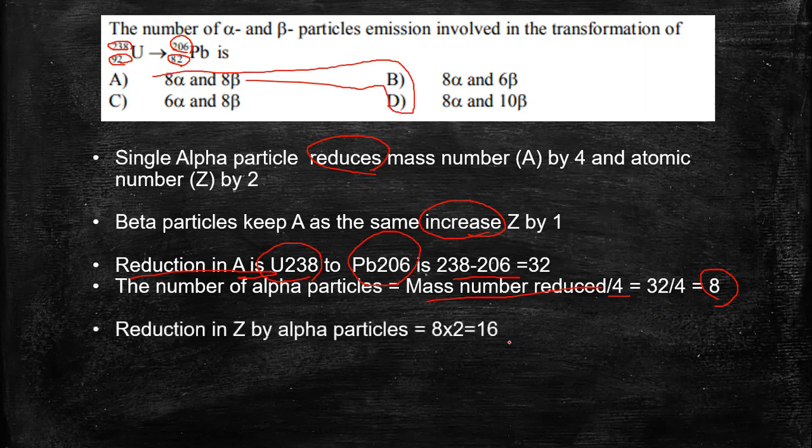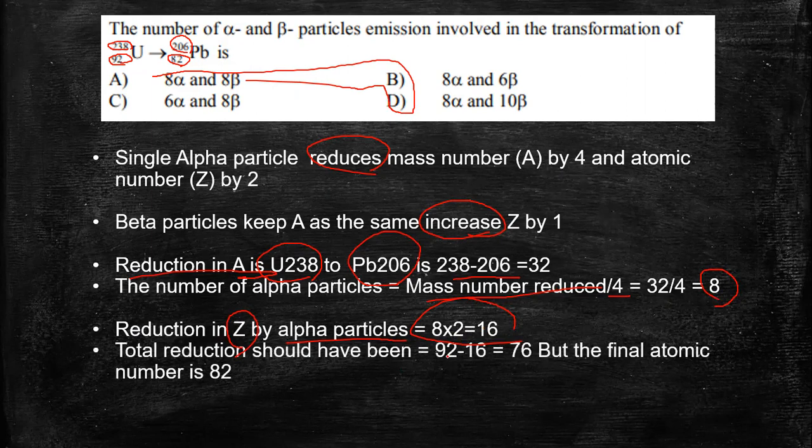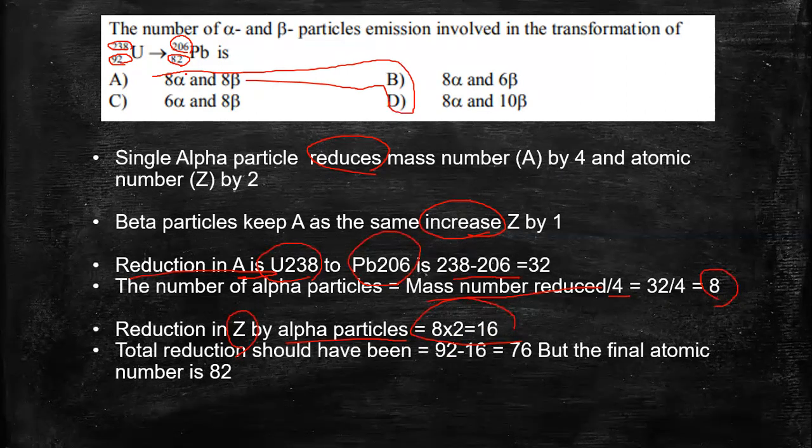Now let's consider the beta particles. Reduction in the atomic number by the alpha particles should be 8 into 2 which is 16, because we have 8 alpha particles which is already established and it reduces the atomic number by 2. So the total reduction should have been 16, that is 92 minus 16. It should have been 76.